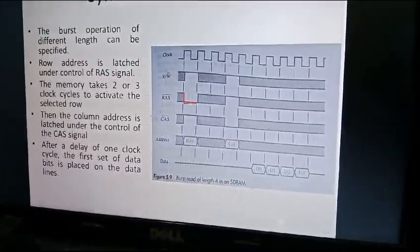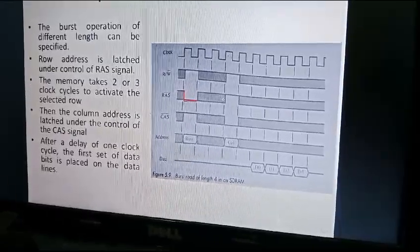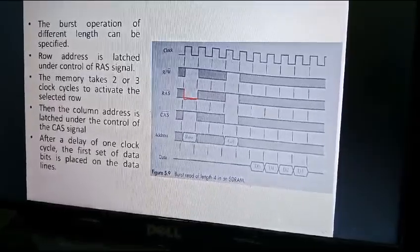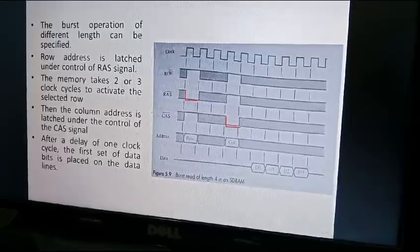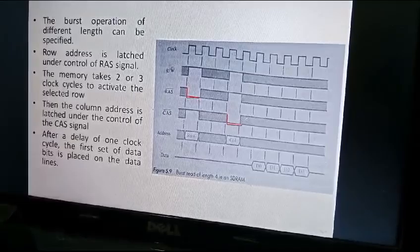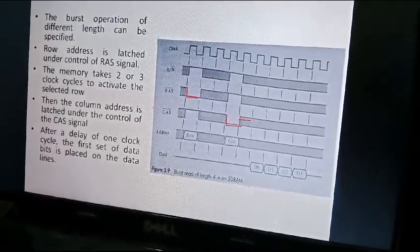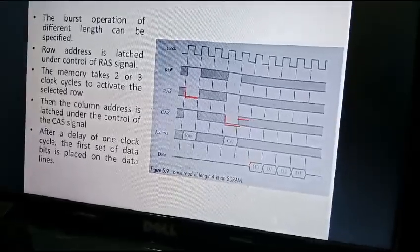The row address selection signal is becoming zero. The memory takes two or three clock cycles to activate the selected row, so there is a time gap of three clock cycles used to activate the row. Then the column address is latched under the control of the CAS bar signal. After a delay of one clock cycle, the first data comes.